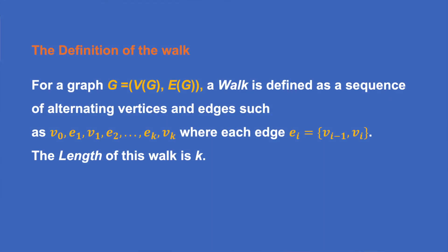For a graph G with vertex set V and edge set E, a walk is defined as a sequence of alternating vertices and edges such as V₀, E₁, V₁, E₂, so on up to Eₖ, Vₖ, where each edge Eᵢ is given by Vᵢ₋₁Vᵢ. The length of the walk is k.